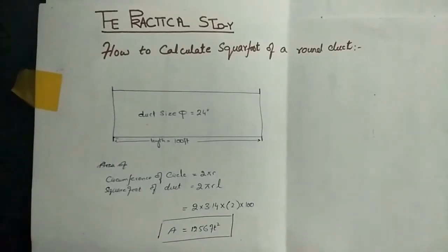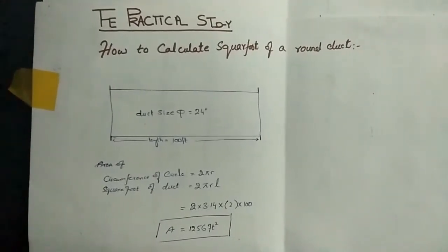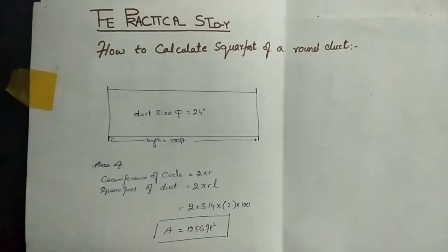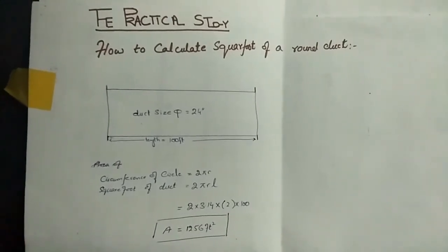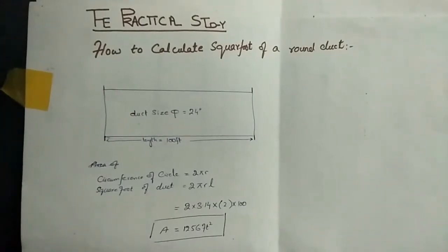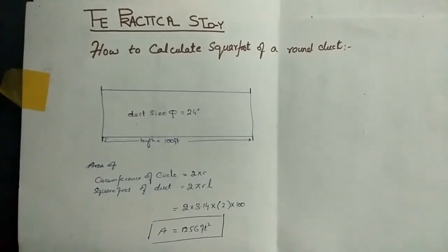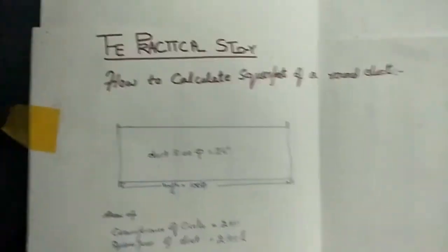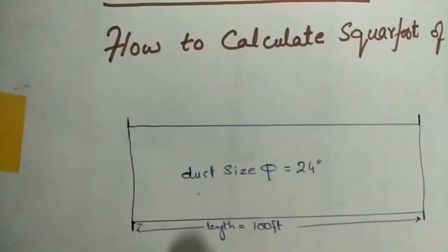Welcome to The Practical Study. I'm going to show you how to calculate the square footage of a round duct. Consider an example where we have a duct with a diameter of 24 inches and a length of 100 feet.